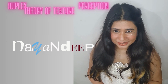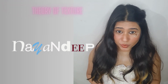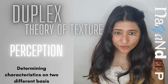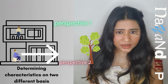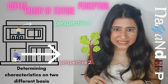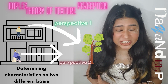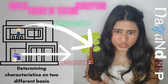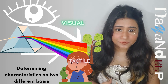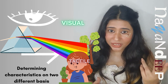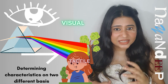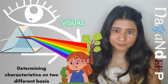Hello, I am Nayandeep and today we are going to understand what is duplex theory of texture perception. Let's first divide this word and understand. Duplex means two. Texture means visual or tactile. Visual is something that you see from eyes and tactile is something that you touch and understand.